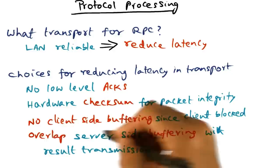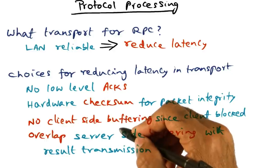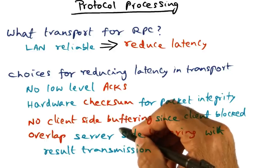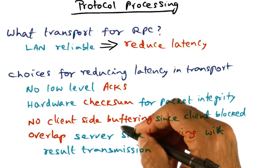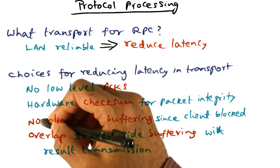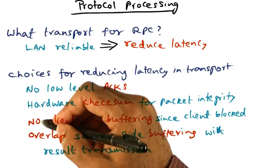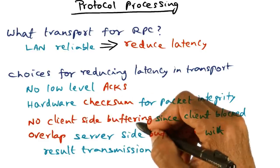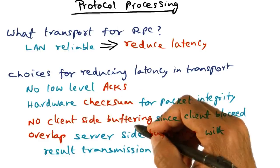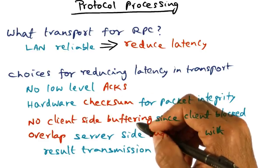The third source of overhead in message transmission is once again related to the fact that messages may get lost in transmission. Therefore, to handle potential loss, you typically buffer the packets so that if a message is lost, you can retransmit the packet.